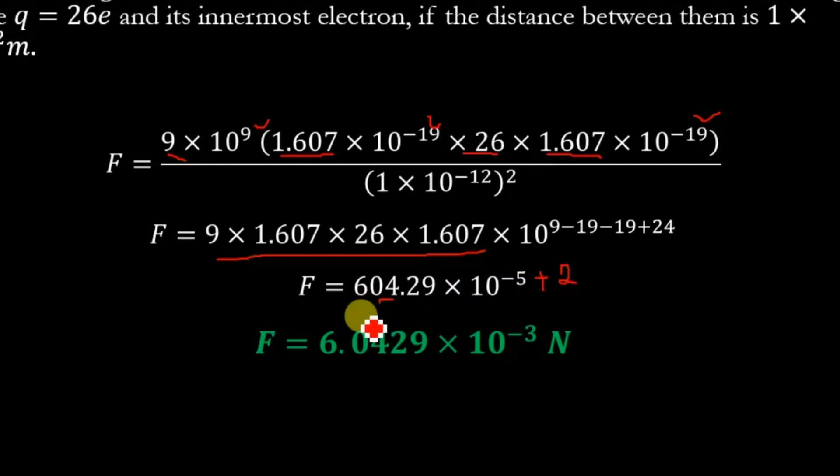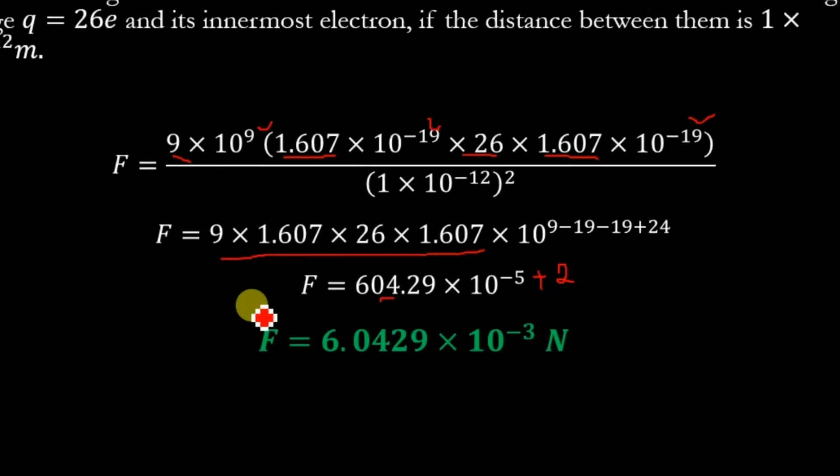When shifting the decimal from right to left, we add to the exponent: -5 + 2 = -3. So F = 6.0429 × 10^-3 N. This is our required force of attraction.